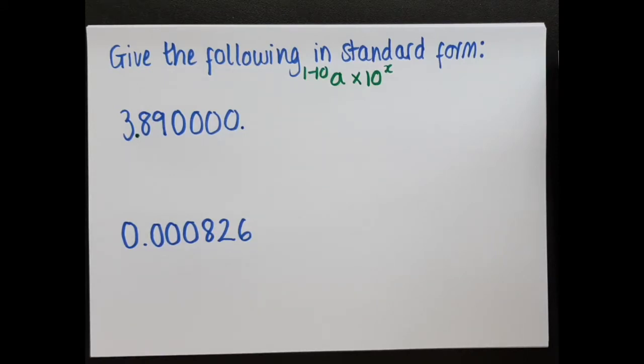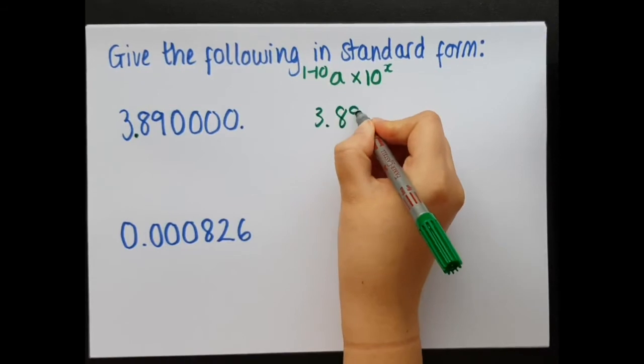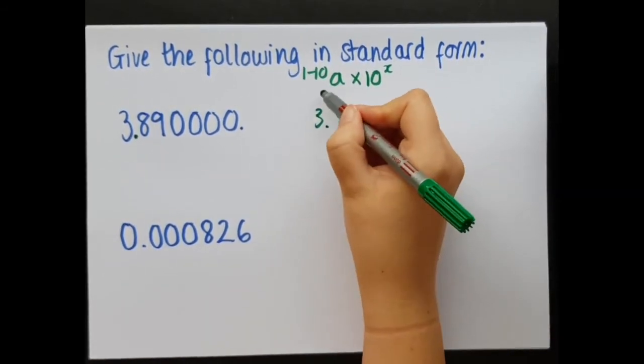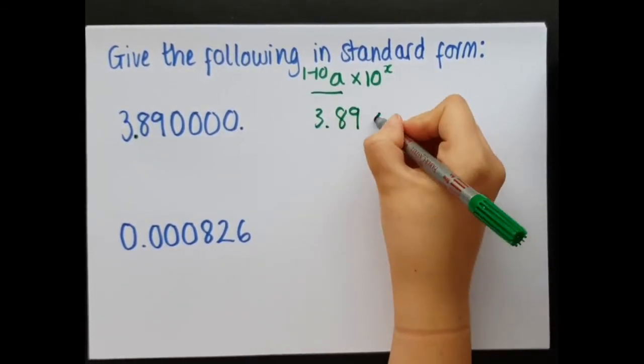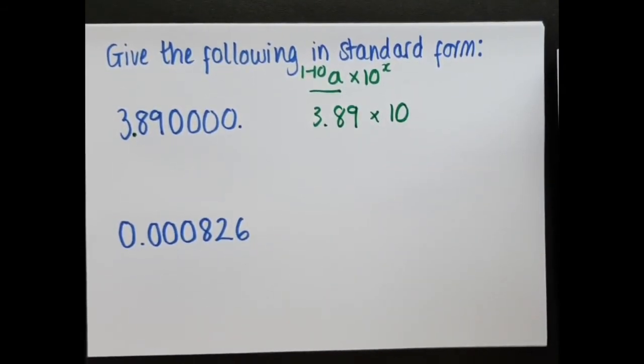Now that I've got my 3.89, what I want to do, and actually I'm going to write that over here, 3.89, that's my first number by the way, that's that bit. So, it's going to be times 10 to the power of something, so it's now figuring out what that power is.